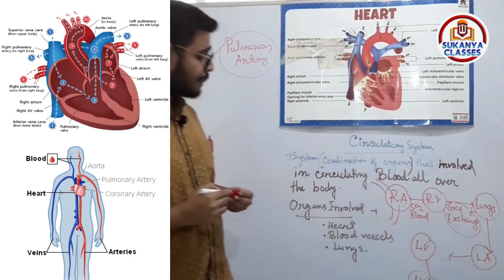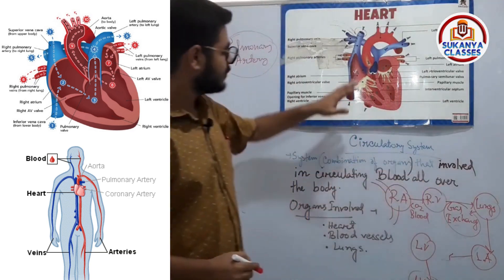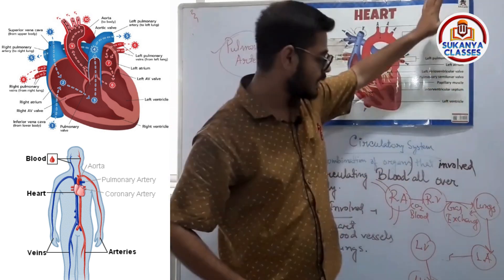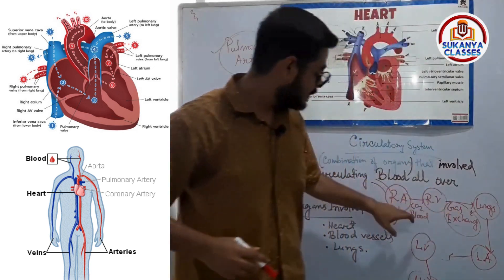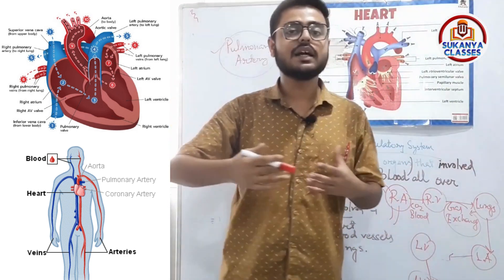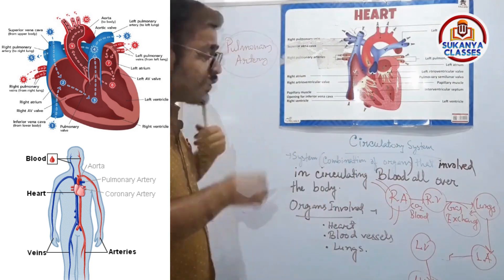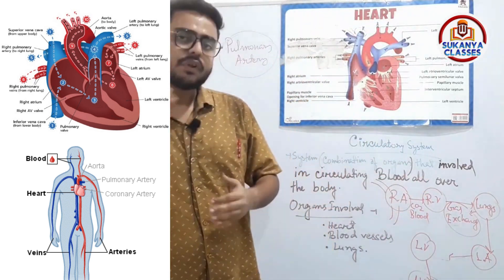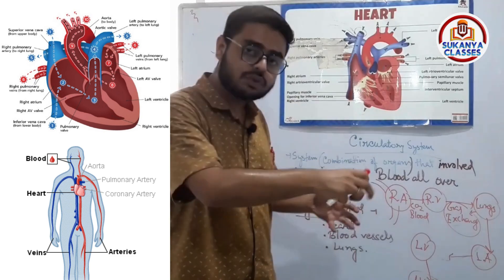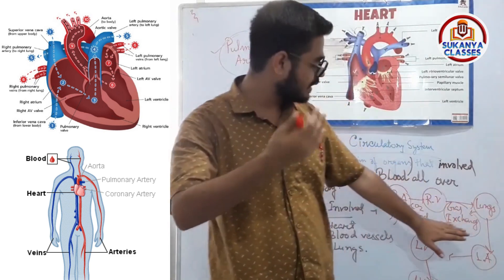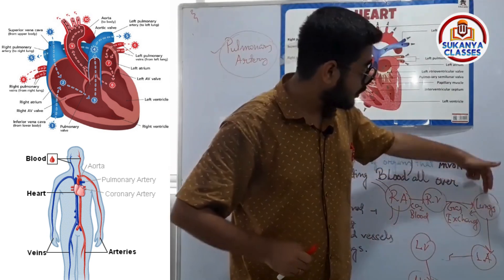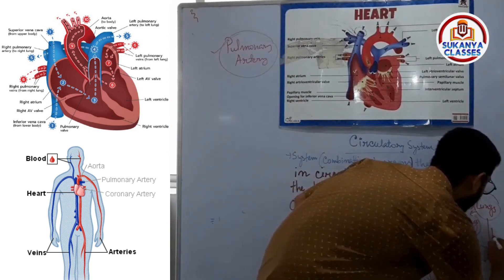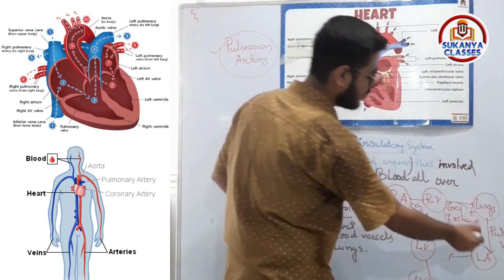To recap: blood loads into the right atrium by the superior vena cava and inferior vena cava, then enters the right ventricle and goes to the lungs. This blood is deoxygenated and needs to be converted to oxygenated blood. The lungs exchange the gases — removing CO2 and giving O2 to the blood — so the blood becomes oxygenated, or pure blood.